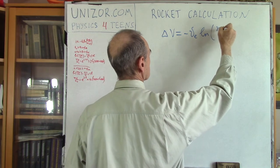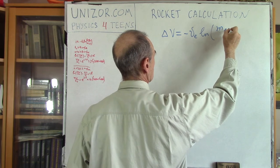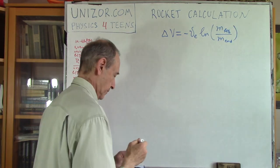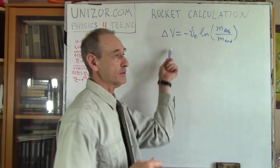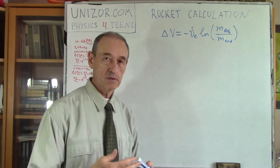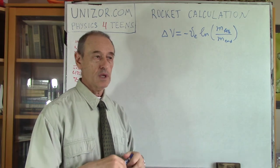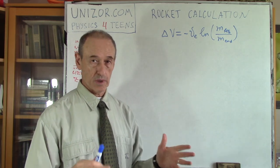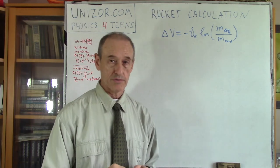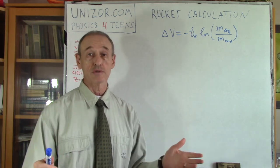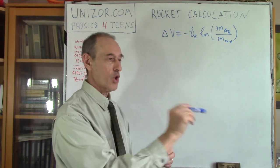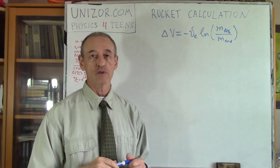The formula which is basically the ideal rocket equation. So let me just specify it again and we will discuss it a little bit. So that's how it looks. Delta V is an increment in the speed of the rocket in some inertial system of coordinates, some inertial reference frame.